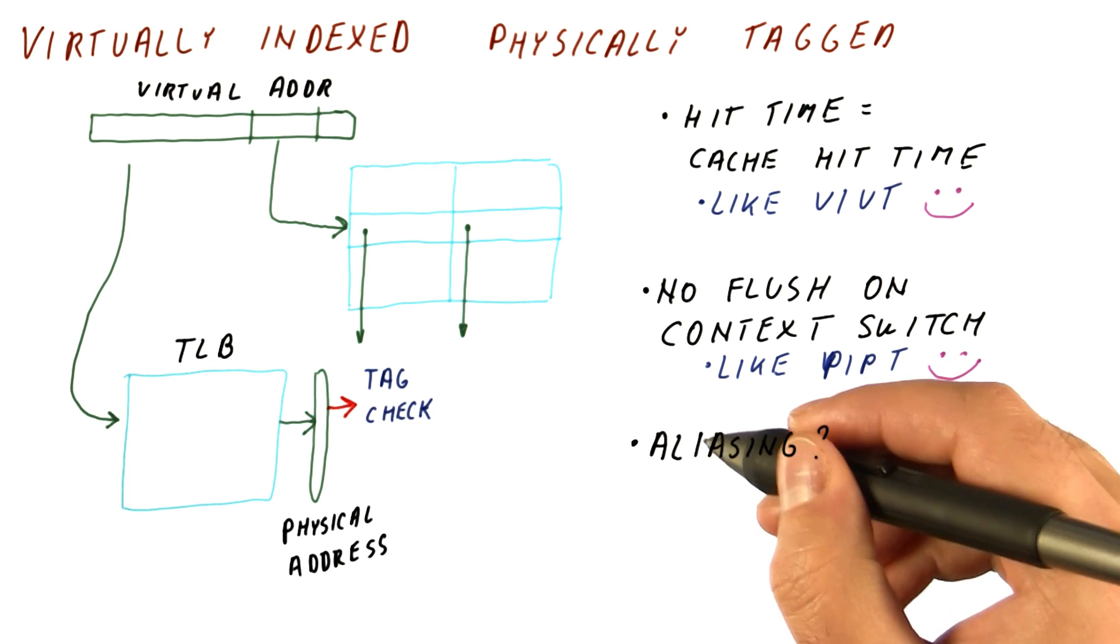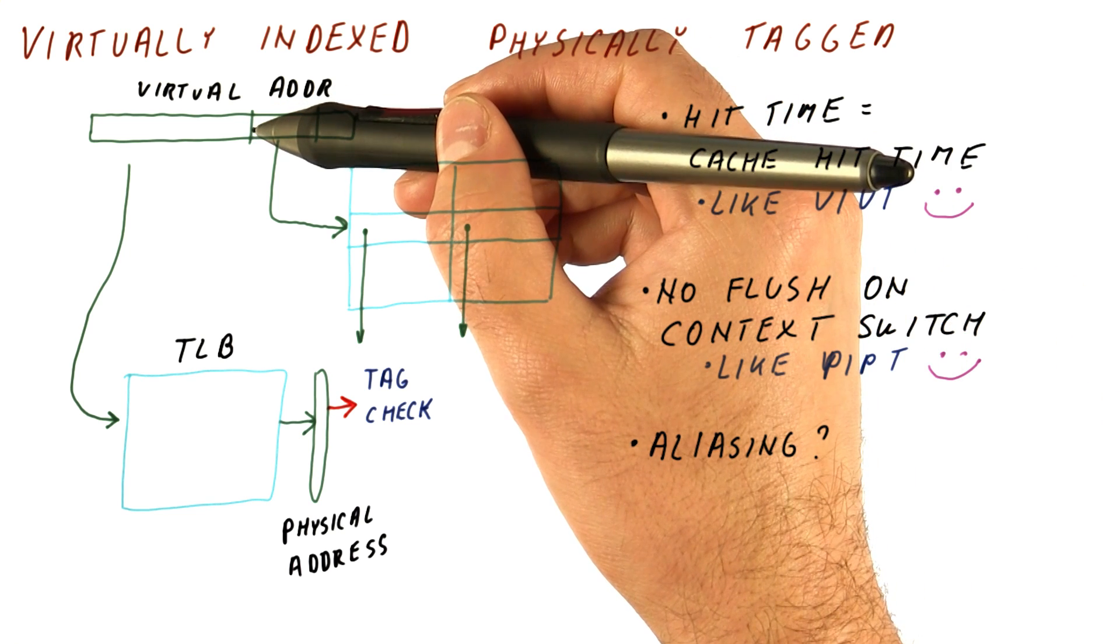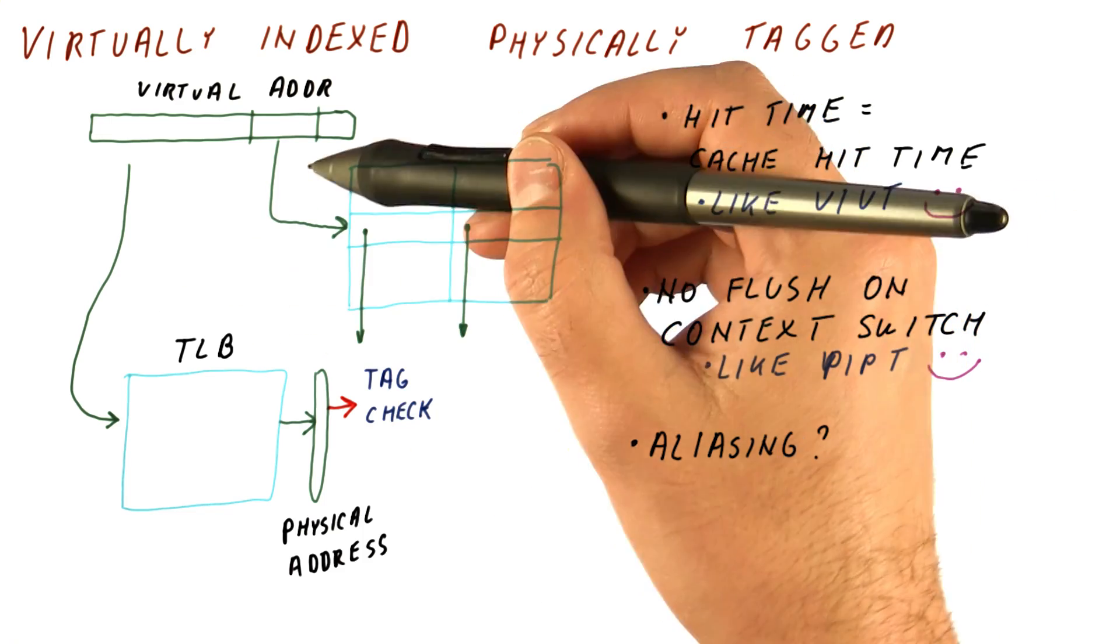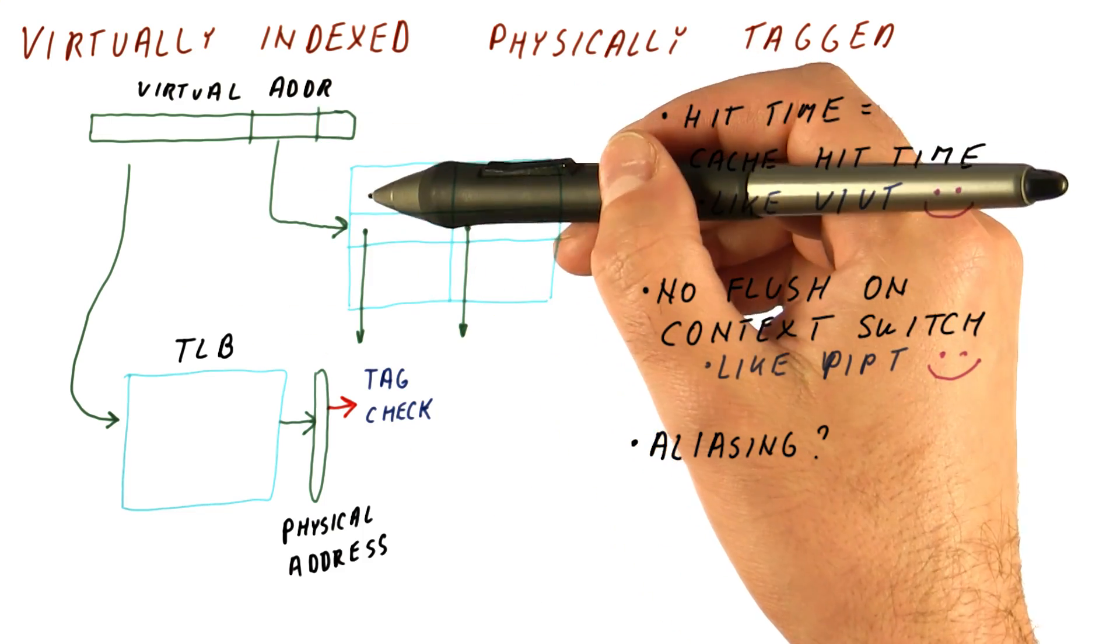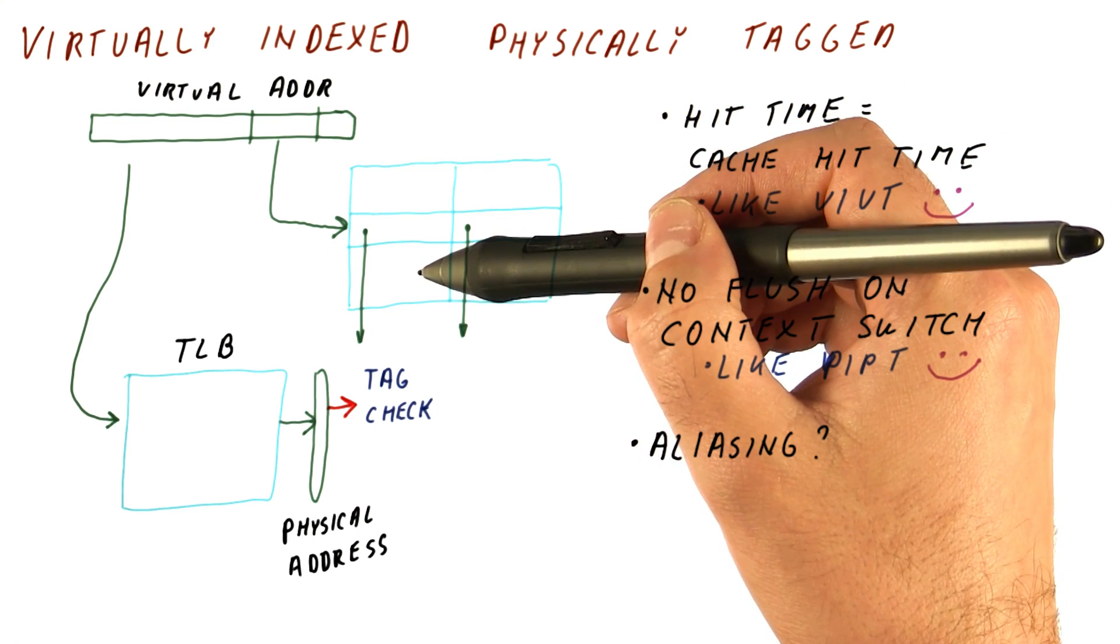But what about aliasing? Recall that aliasing happens because multiple virtual addresses in the same address space might map to the same physical address, but because we do virtual access to the cache, these addresses might end up in different places in the cache.